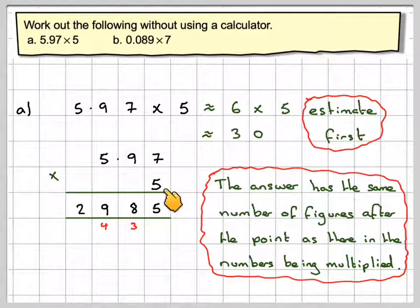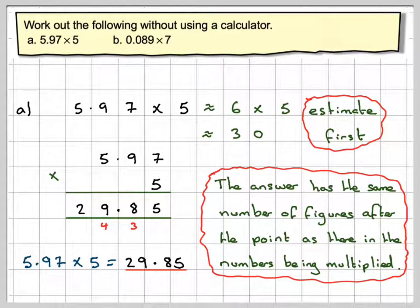So there's no decimal point here, so there's no number here, but there are 2. So we need to move in 1, 2. So my decimal point needs to go here. Which makes sense with my estimation as well. So the final answer is 5.97 times 5 is 29.85.